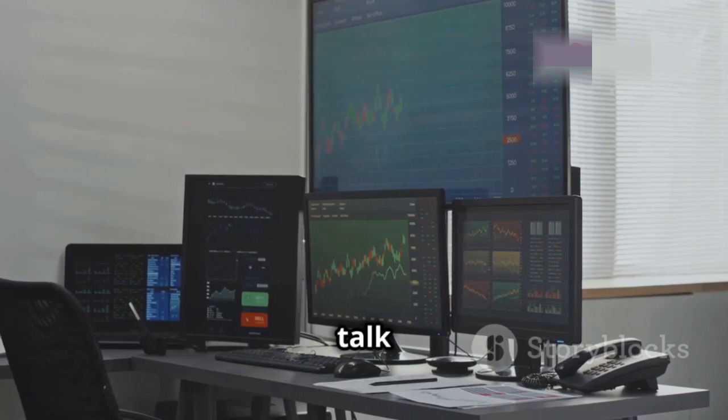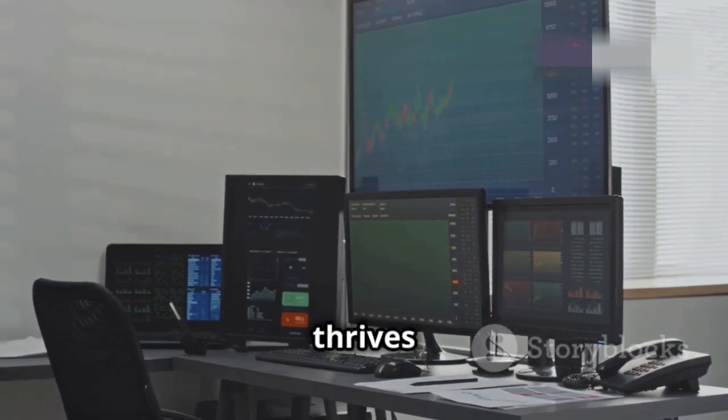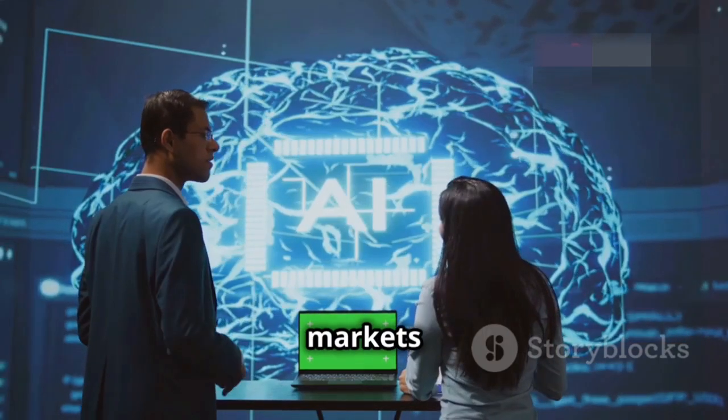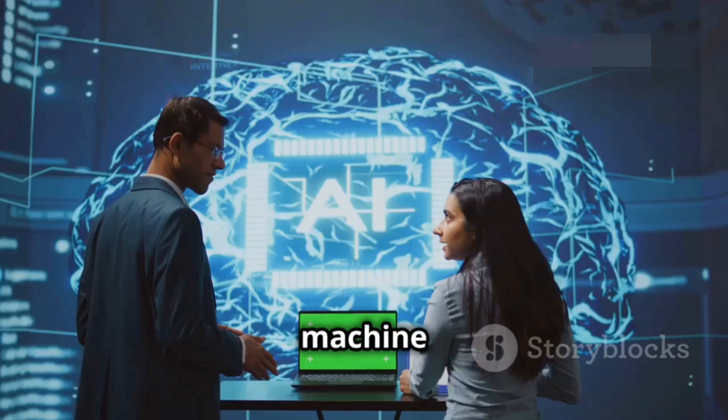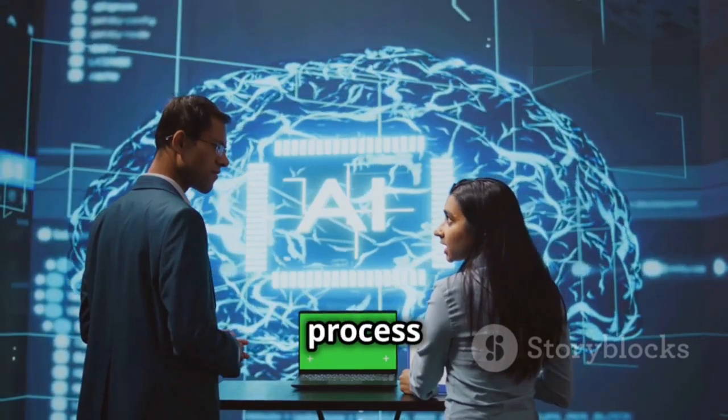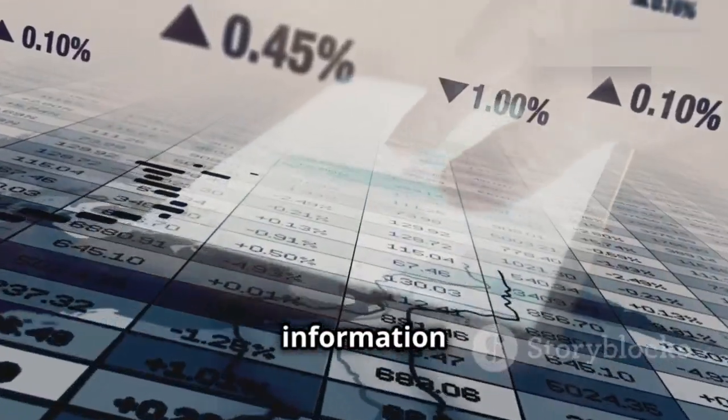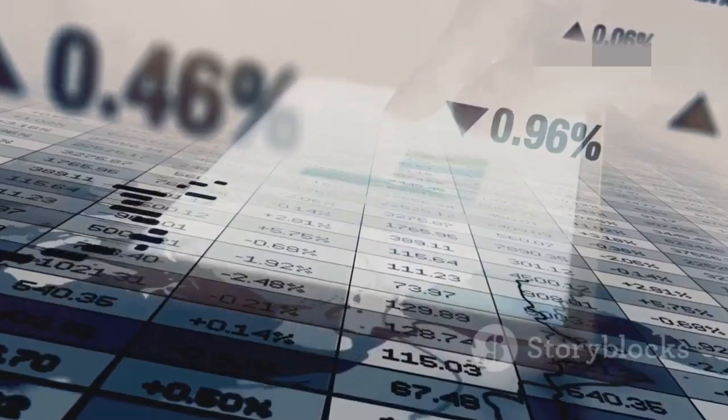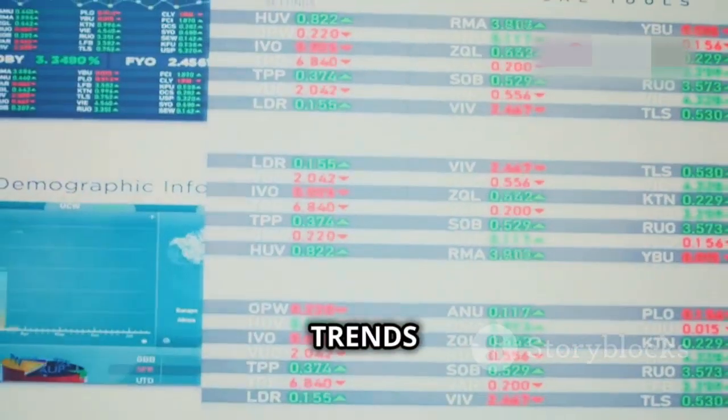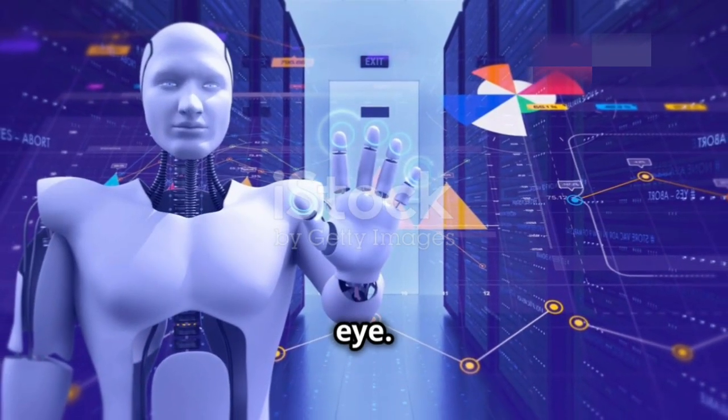First up, let's talk about data. AI thrives on data, and our financial markets are a goldmine of it. With machine learning algorithms, AI can process massive amounts of information faster than any human ever could. This means recognizing patterns and trends that are invisible to the naked eye.